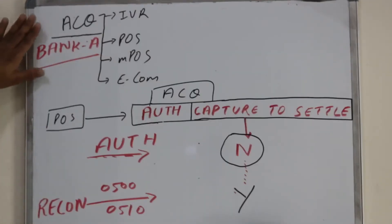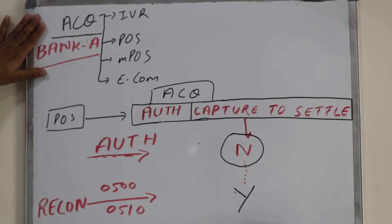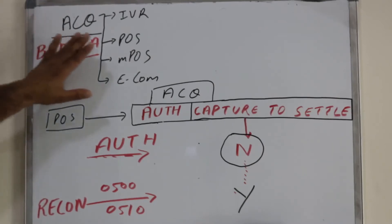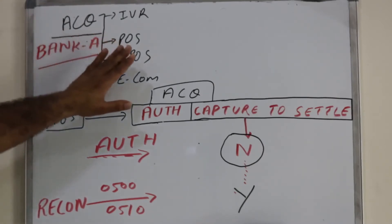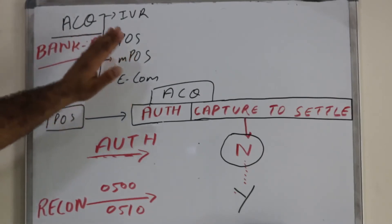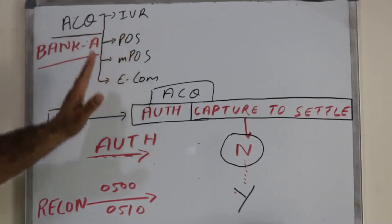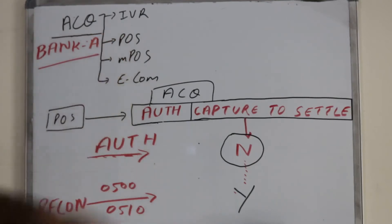We have an acquiring bank, Bank A, acquiring different channels like IVR, POS, M-POS, and e-commerce. It can be any acquiring system.